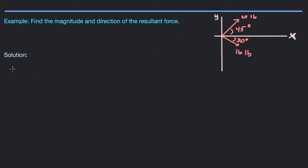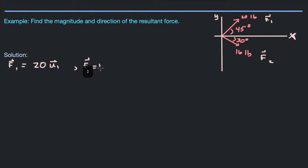So what we do is we set up — we'll call this one F1, the first force, and then F2 down here. We want to get the component forms of F1 and F2. F1 is really going to be 20 pounds times the first unit vector U1, and F2 is going to be 16 pounds times a unit vector U2.